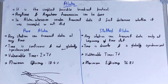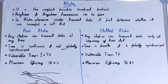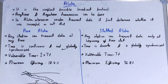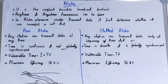Slotted ALOHA is a modified or improved version of pure ALOHA. In slotted ALOHA, we make use of time slots — a fixed time slot is decided, and only when the time slot starts can a station request for transmission. Once a particular station starts sending, the other stations have to wait, which makes slotted ALOHA better than pure ALOHA.